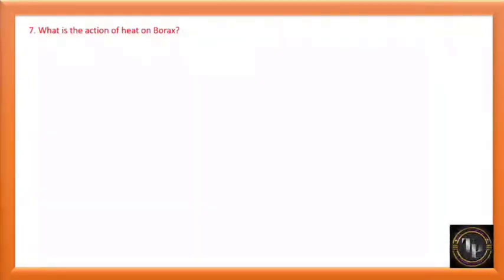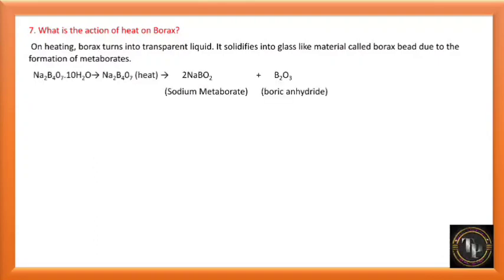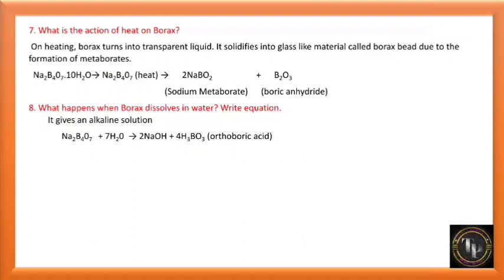What is the action of heat on borax? Na2B4O7·10H2O on heating turns into a transparent liquid and solidifies into a glassy material called borax bead, due to the formation of metaborates. Na2B4O7·10H2O heated gives Na2B4O7, which on further heating gives Na2BO2 (sodium metaborate) with elimination of boric anhydride B2O3.